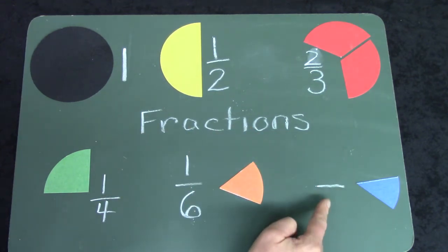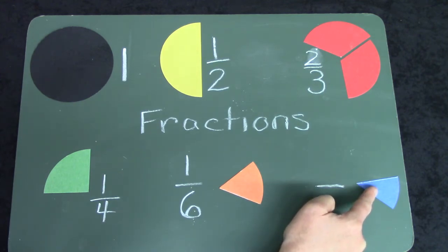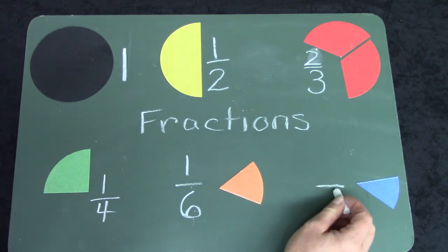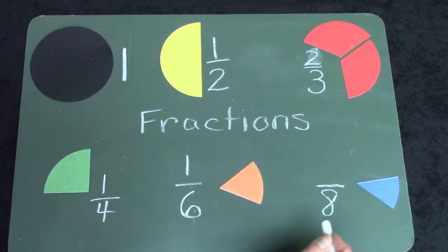Do you remember how many of these pieces I needed to make a full circle? Yes, it was eight. How many do I have? I have one out of the eight pieces. One eighth.